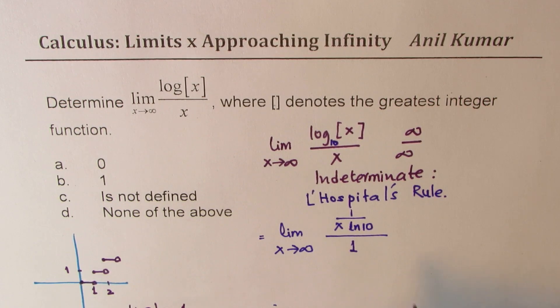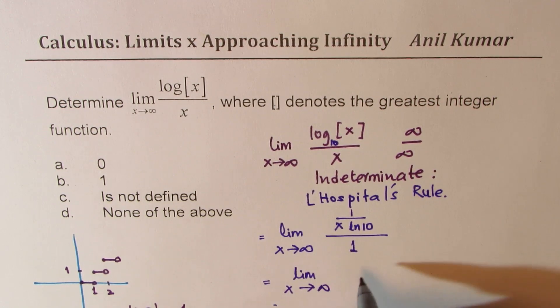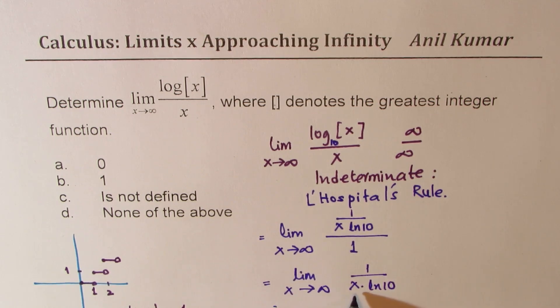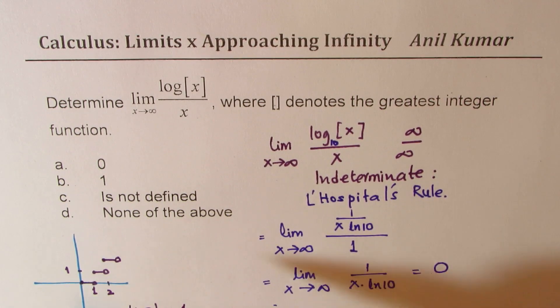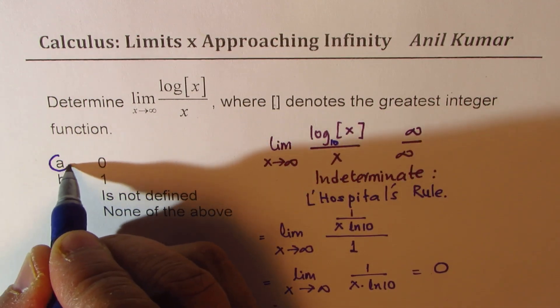Now what do we get? We get this as equal to limit when x approaches infinitely large value of 1 over x times ln 10. Now if I substitute x as very large value, what do I get? I get 0. So therefore, option A is the right option.